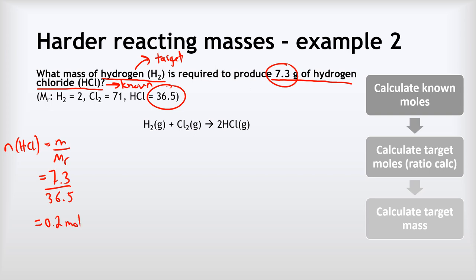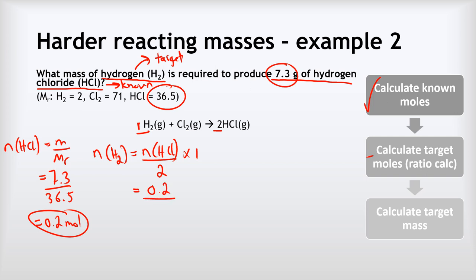Now the ratio calculation: the number of moles of H2 equals the number of moles of HCl divided by 2 — because there are two HCl's in the equation — multiplied by 1 — because there is only one H2 in the equation. So 0.2 divided by 2 multiplied by 1 gives us 0.1 moles of hydrogen.